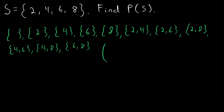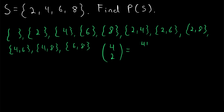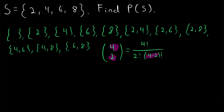Let's use the same strategy to check. S has four elements, and we're counting two-element subsets, so four choose two — the number of ways to create two-element subsets from a set with four elements. That equals four factorial divided by two factorial times two factorial, which works out to six. We count our two-element subsets and get six — wonderful, we got them all.